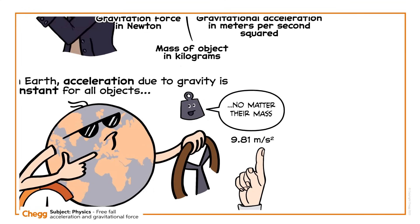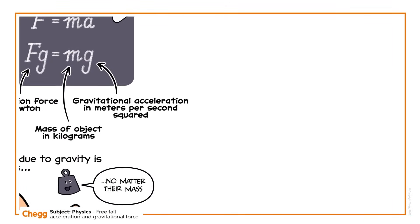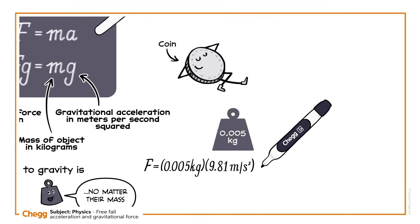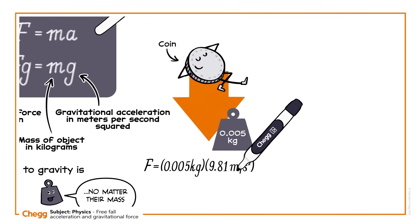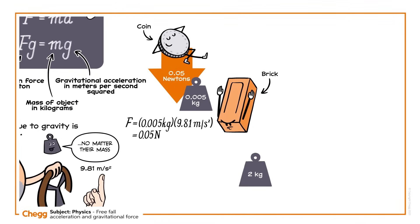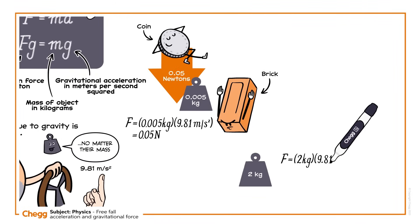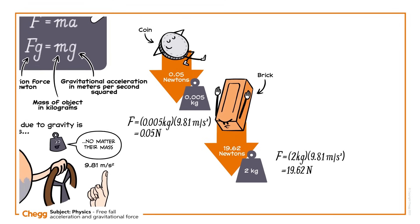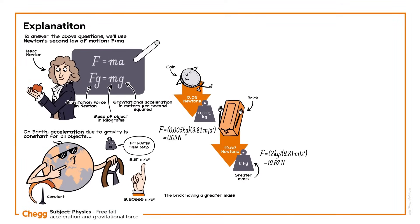Let's insert the values from our thought experiment into this equation. The coin's mass is 0.005 kilograms. Multiply by 9.81 and we see that it falls with a gravitational force of around 0.05 newtons. The brick's mass is 2 kilograms. Multiply the gravitational acceleration 9.81 by 2, and we get a gravitational force of 19.62 newtons. So the brick, having a greater mass, falls with a greater gravitational force, or Fg.